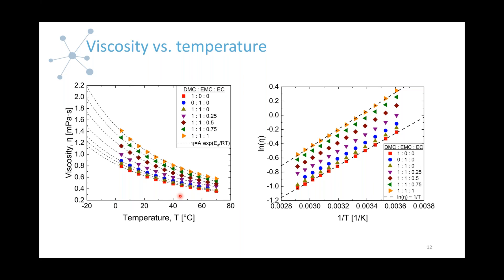The data can be used with our Clarity data analysis software, which comes included with the Initium. Having a large amount of data also benefits machine learning models for improved viscosity prediction. The error bars are smaller than the size of the symbols — demonstrating high repeatability for these low-viscosity samples.